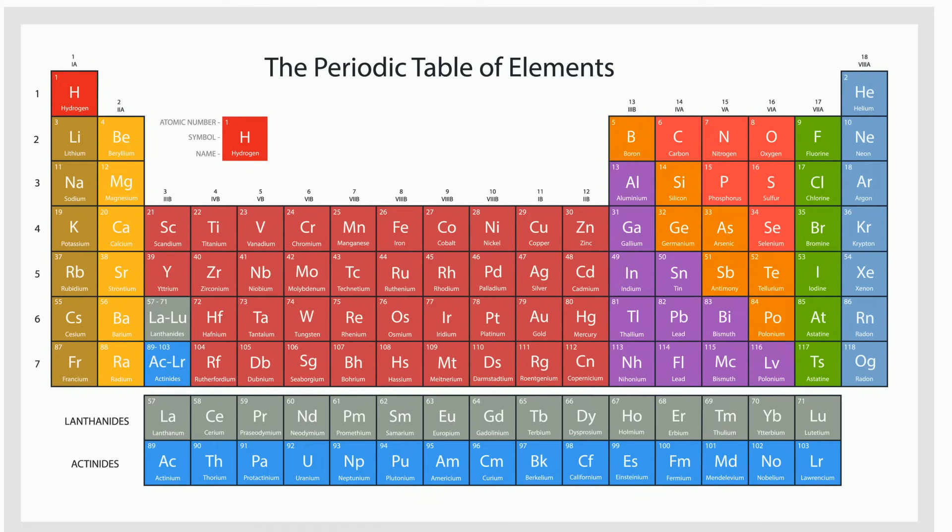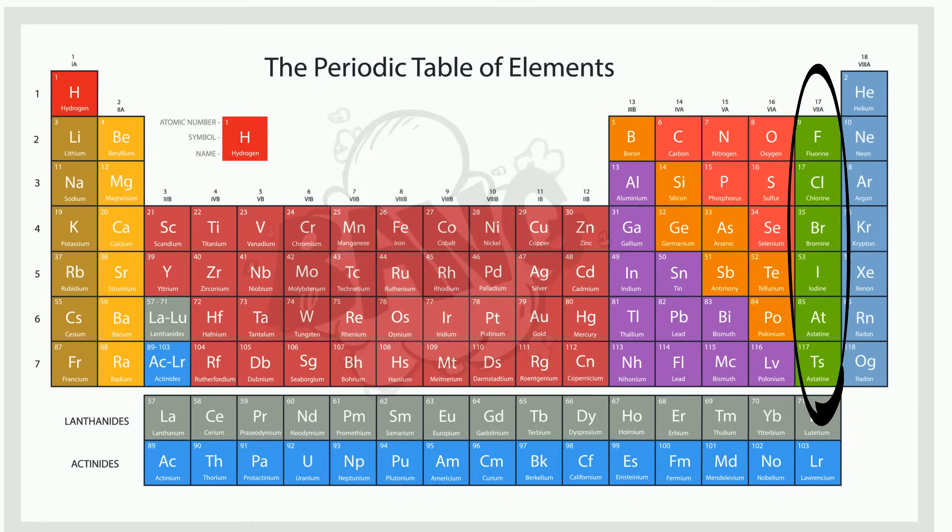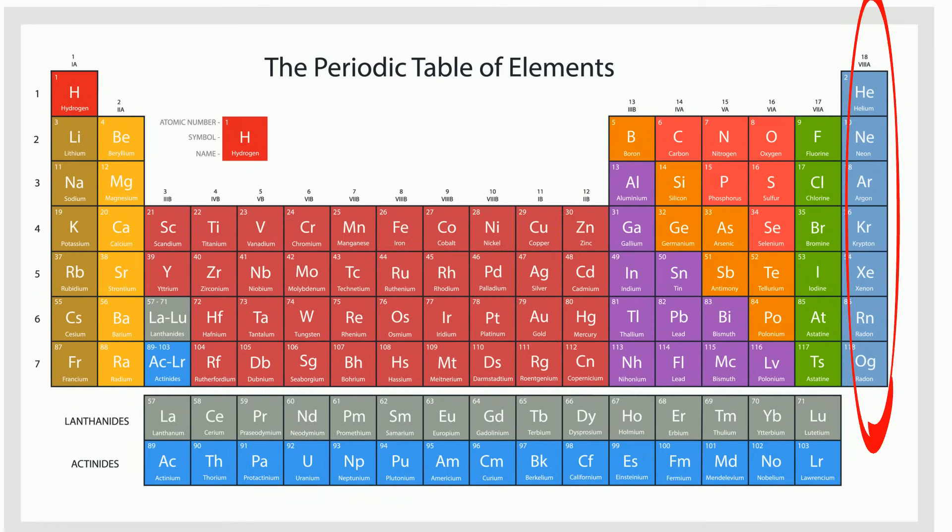The halogens, which are group 17, are the most reactive of the non-metals. These elements combine with group 1 to form salts. The noble gases, group 18, exist as isolated atoms. They are all stable because their outer energy level is full.